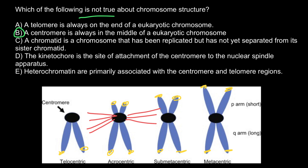And the last statement, answer E: heterochromatin is primarily associated with the centromere and telomere regions. This is also true. We have euchromatin and heterochromatin, and heterochromatin is usually found in areas close to the centromere and also close to the tips of the chromosomes.